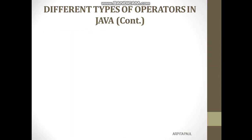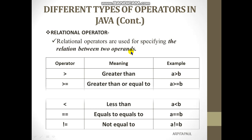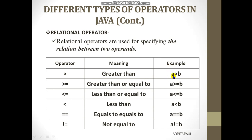The next one is the relational operator. Relational operators are used for specifying the relation between two operands. The greater-than sign checks if one value is greater than another. The greater-than-or-equals-to sign checks if a is greater than or equal to b. The less-than-or-equals-to sign checks if a is less than or equal to b.